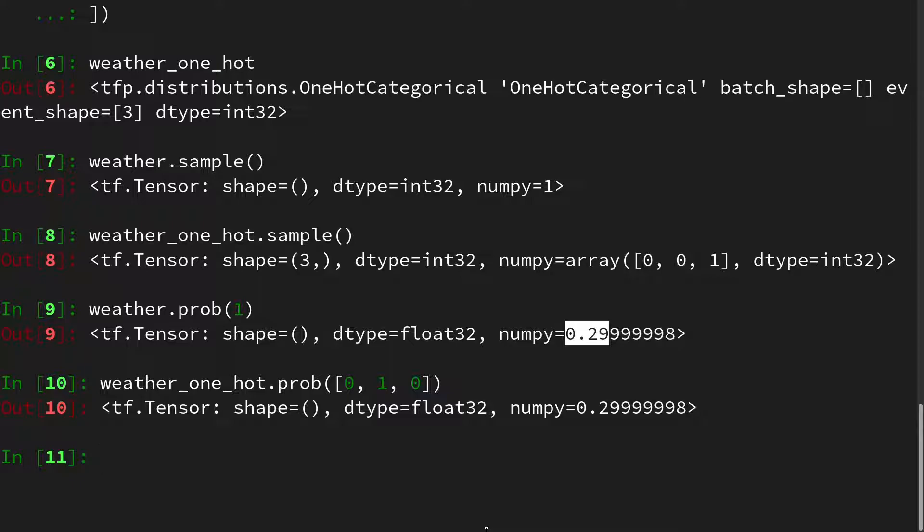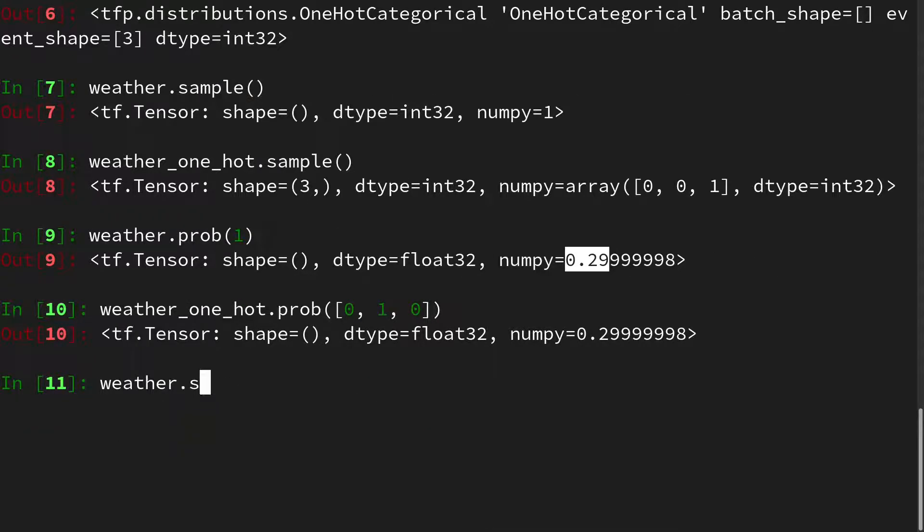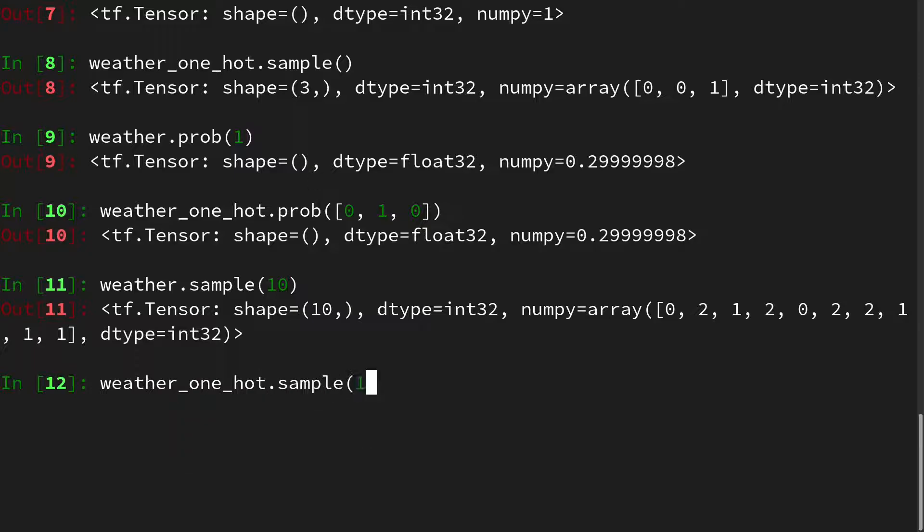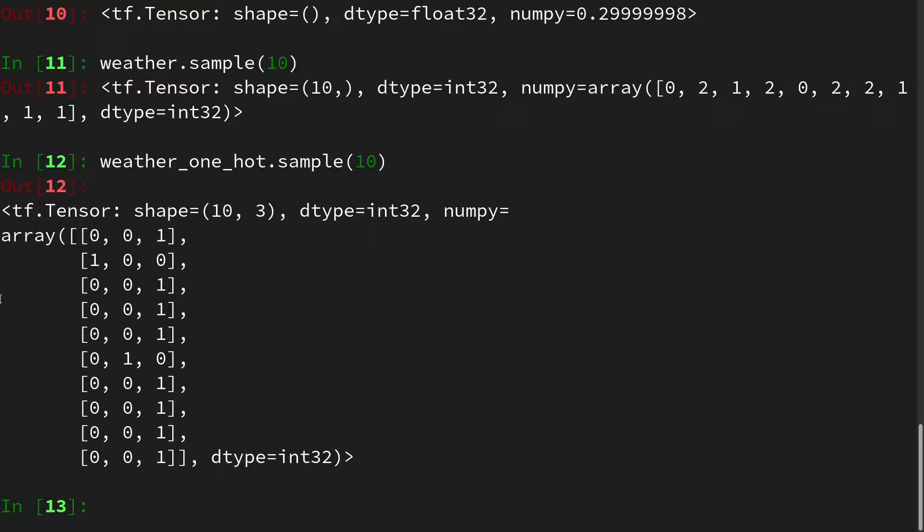But what I find particularly interesting is if we sample more than one observation. So if we look at the weather for more than one days, and if we use the regular categorical and we sample it, let's say 10 days, then we get an array of encodings. So for instance, here we have cloudy, sunny, rainy, and so on. But if we sample the one-hot weather 10 times, then we get a matrix or a rank 2 tensor, because we have like an array of vector observations.